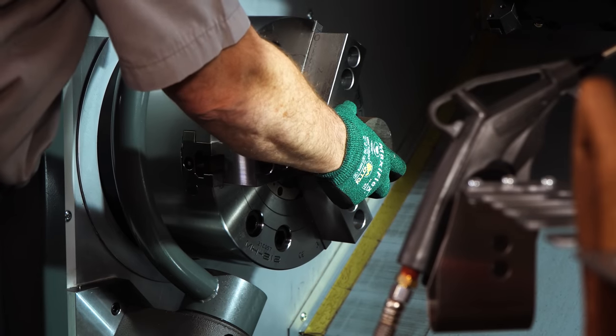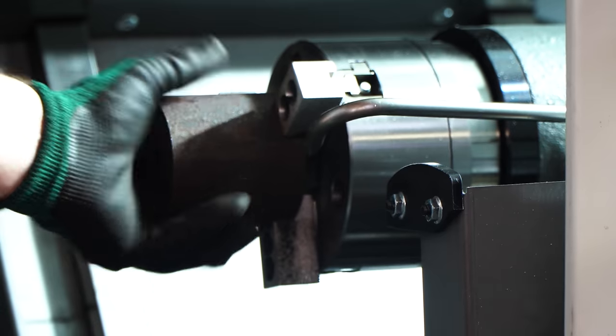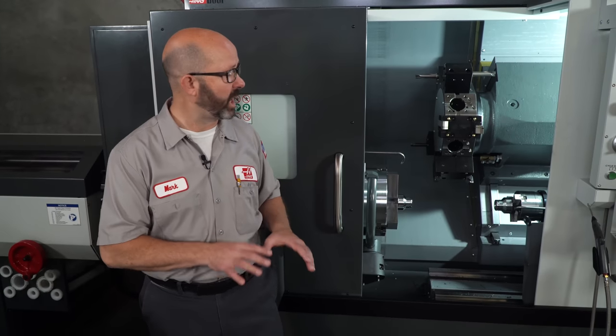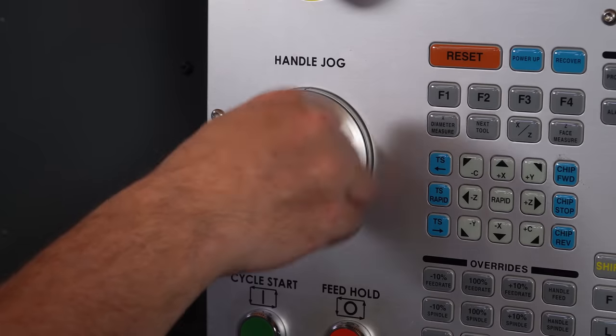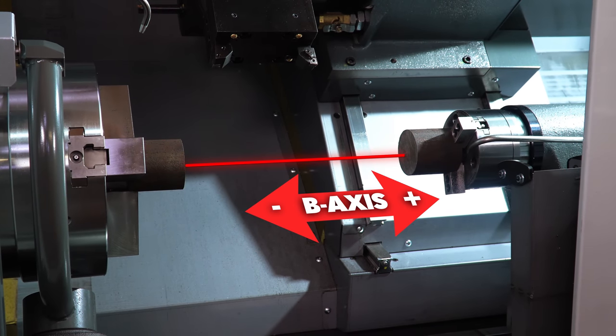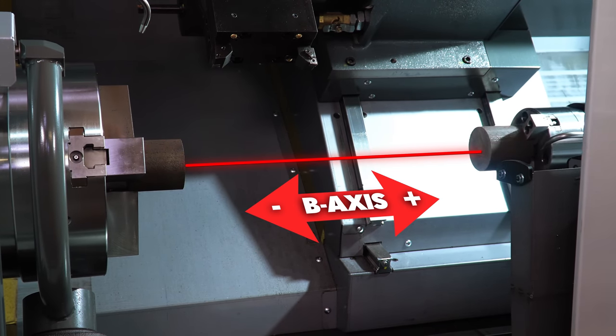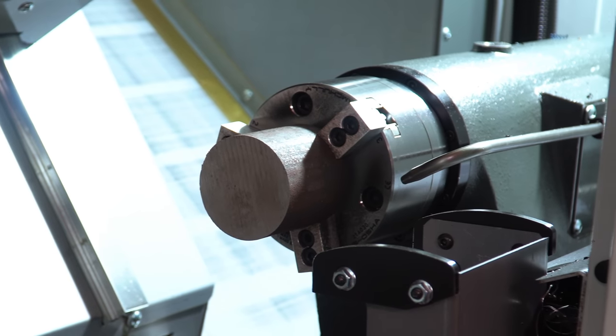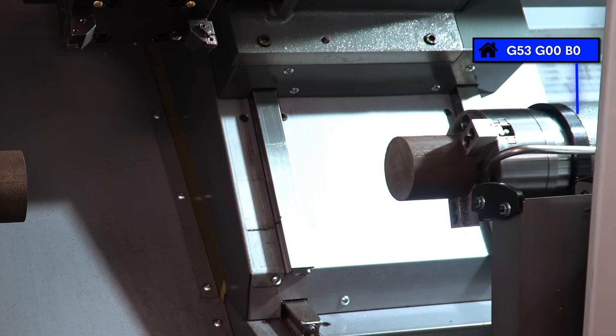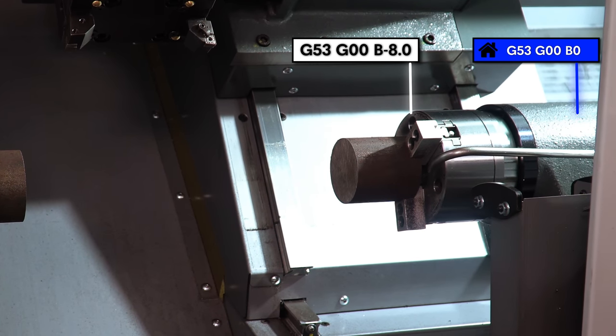Now it's time for our part setup, and before we can set our tool and our work offsets, we've got a decision to make. We have to decide where we want that sub-spindle during our G14 machining operation, and that sub-spindle is our B-axis. Now for this part on this machine, we're going to send our B-axis to B minus eight inches, about B minus 200 millimeters.